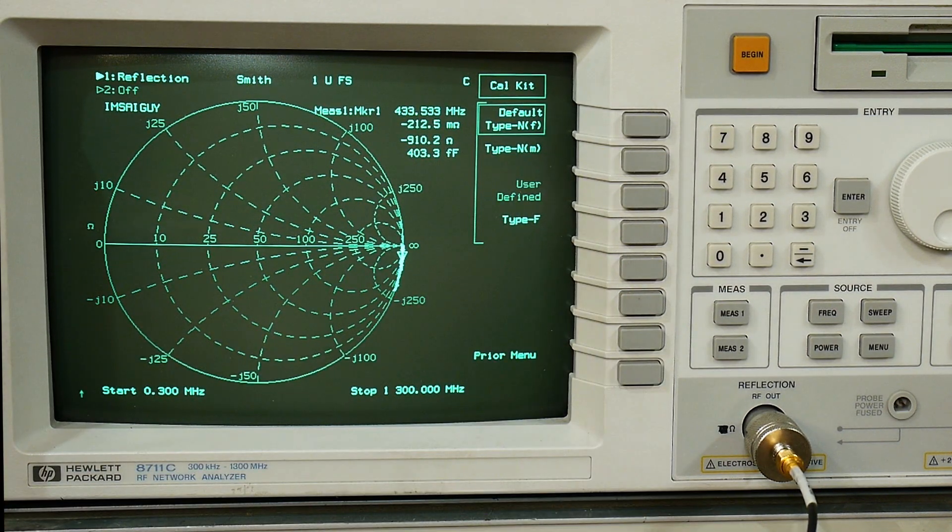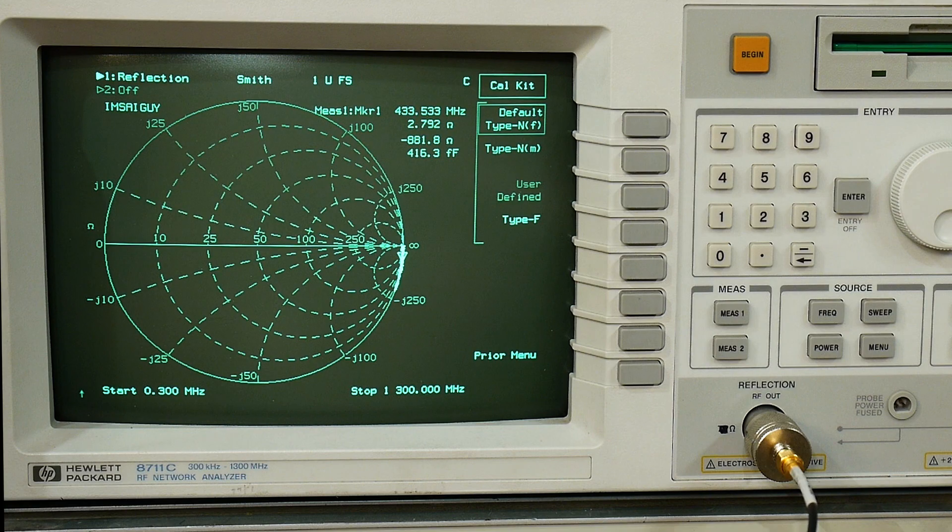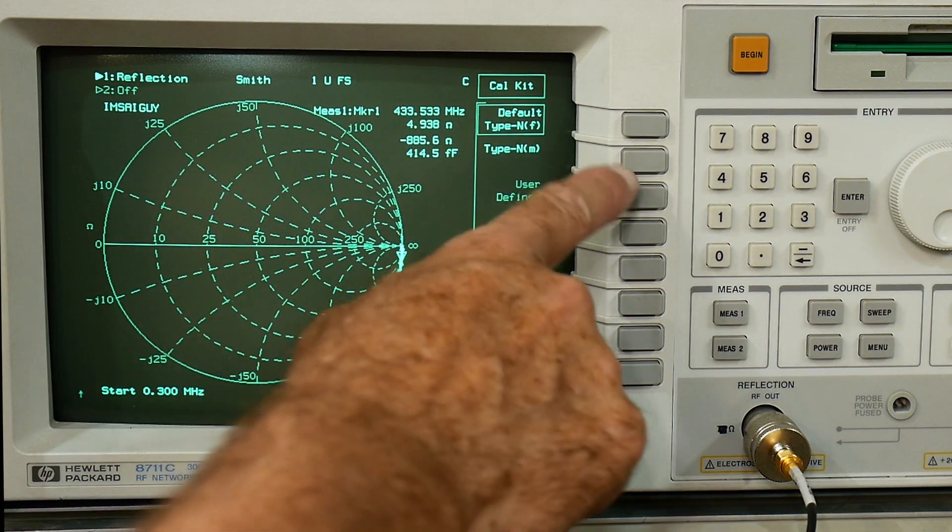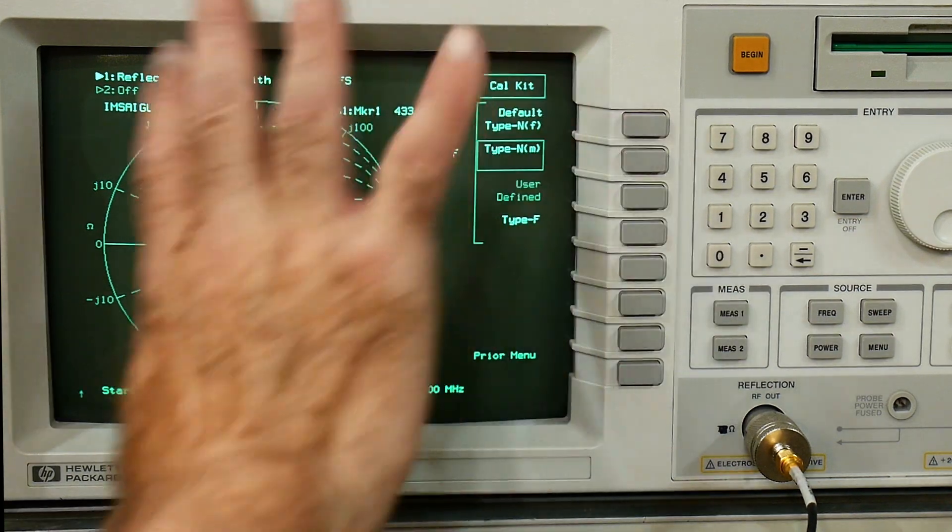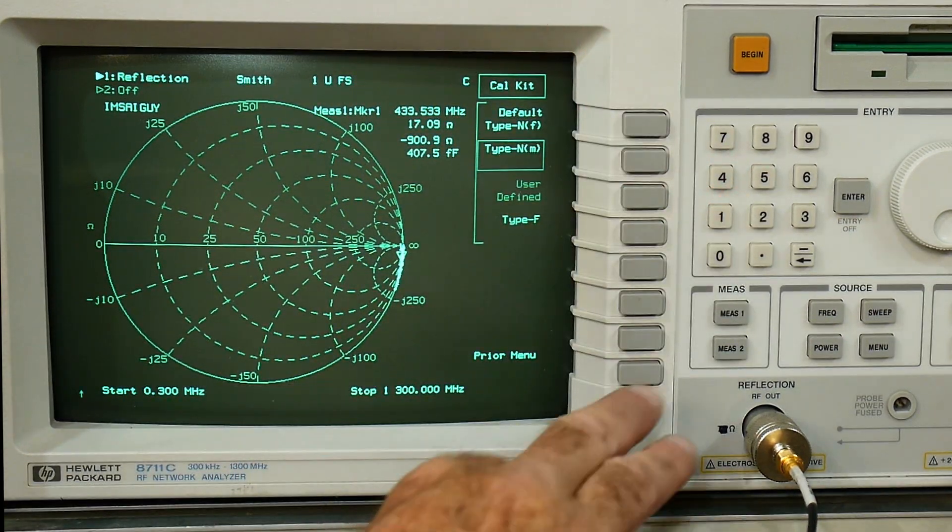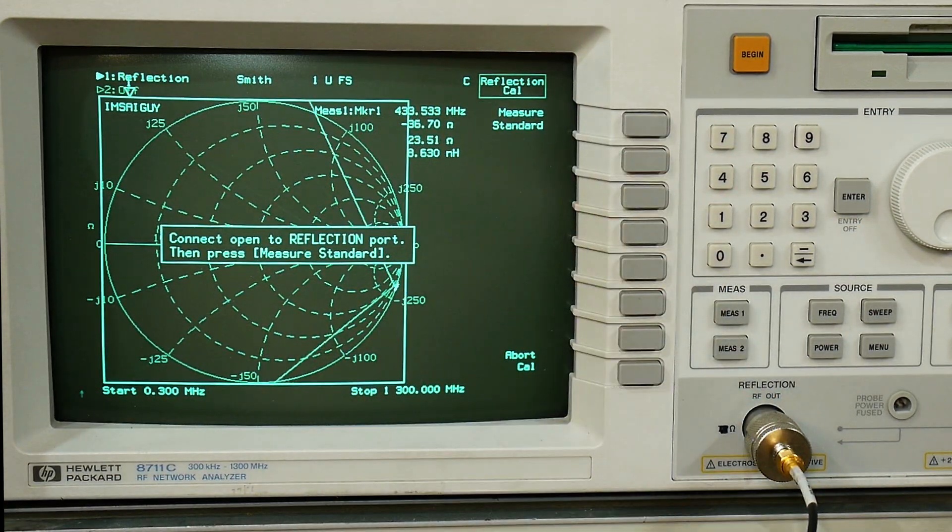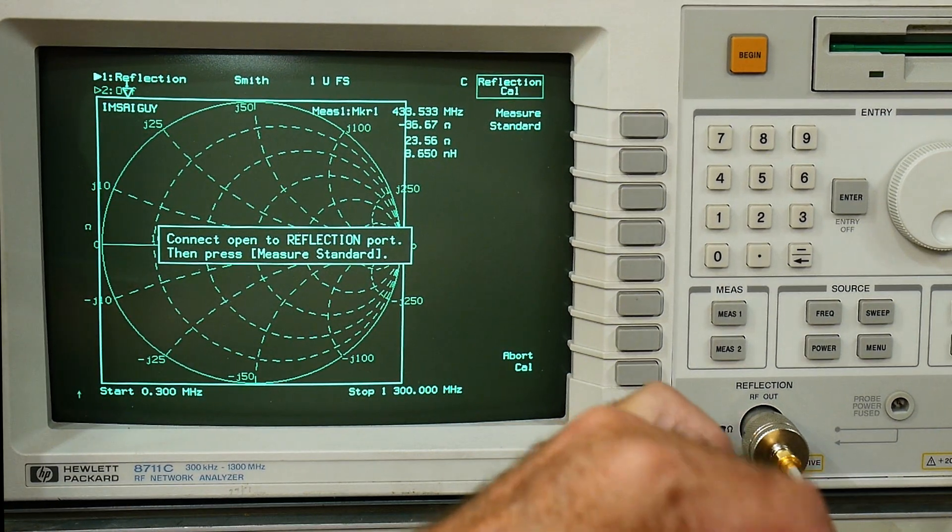I'm here in the calibration menu and you go to cal kit and it says default cal kit. Do not use the default cal kit. Say type N which is just a generic thing. If you go to the generic thing and then go back to calibrate, let's calibrate with the generic thing.